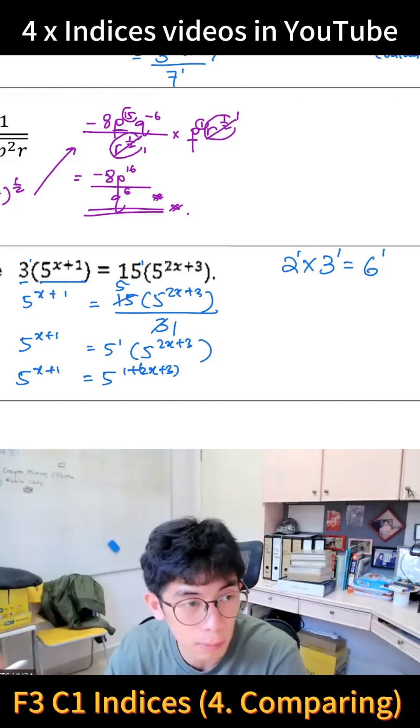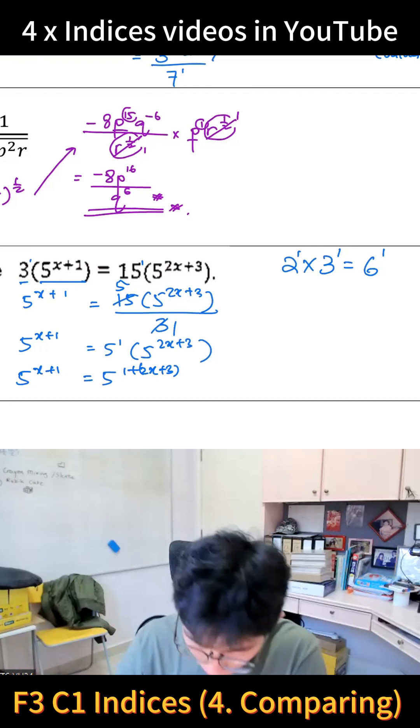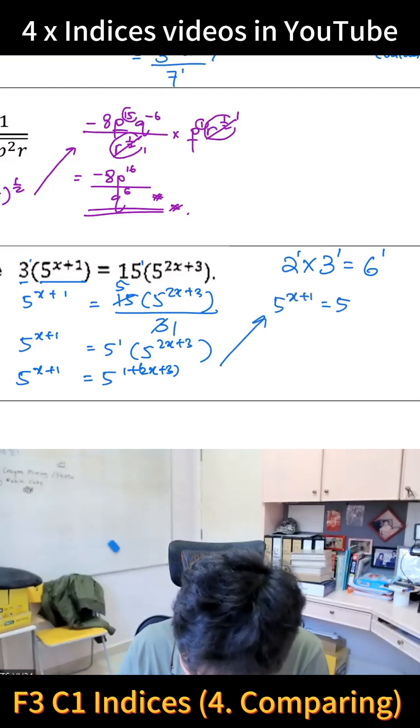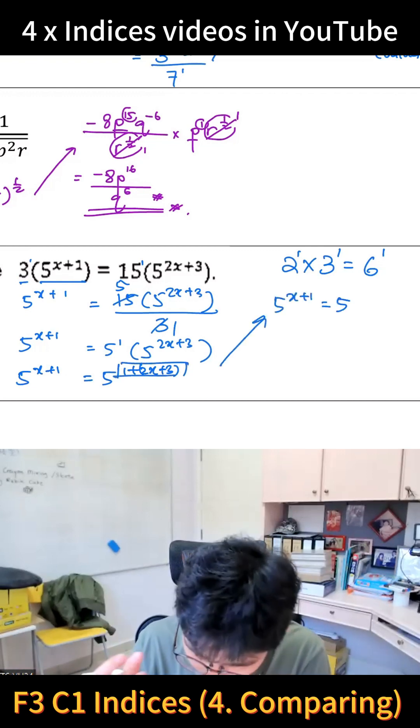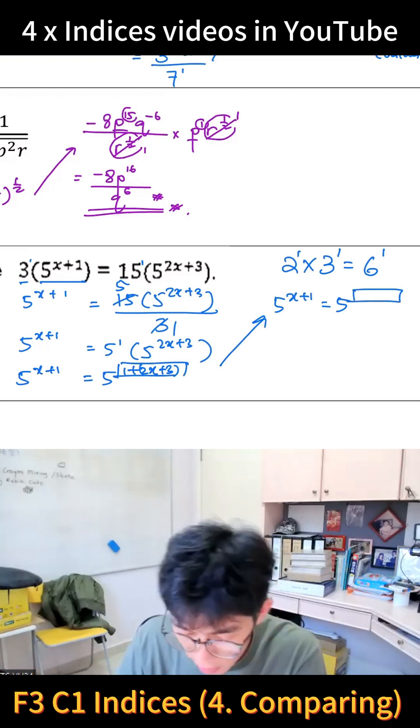Then you have 5^(x+1), then you have 5^... I'm going to expand the brackets. Tell me, can you see there's a 1 plus (2x + 3) there? We're going to expand it. What will I get?